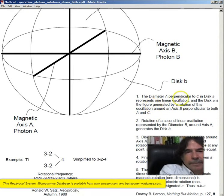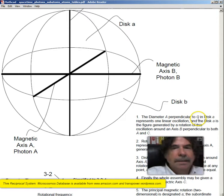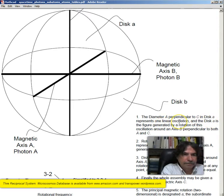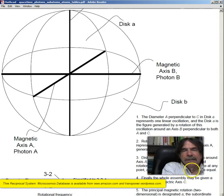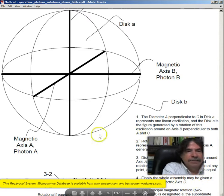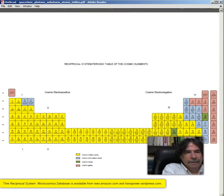Let's imagine this photon A here and photon B here. So the magnetic axis will be A, and for this side will be magnetic axis B, and this will be the electric axis. So let's go over these steps here. A diameter A perpendicular to C. A diameter A perpendicular to C in disk A represents one linear oscillation. And the disk A is the figure generated by rotation of this oscillation around the axis B, perpendicular to both A and C.